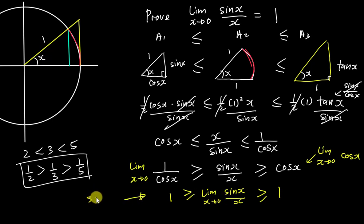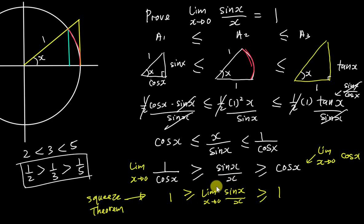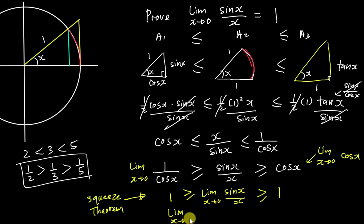In order to conclude that the limit of sin(x)/x equals one as x approaches zero, we use the Squeeze Theorem. The Squeeze Theorem tells us the minimum possible value here is one, since the inequality also says it must be bigger than or equal to one — so it cannot be 0.5 or 0.1. Therefore, by the Squeeze Theorem, the limit as x approaches zero of sin(x)/x equals one. Proven.